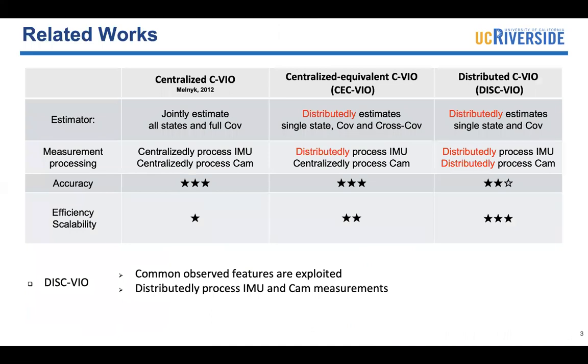The closest work to ours is the centralized method. In the centralized method, there exists a fusion center that jointly estimates all the states and covariance. So all the measurements are processed centrally. Ideally, it can achieve the best accuracy, but it lacks efficiency and scalability.